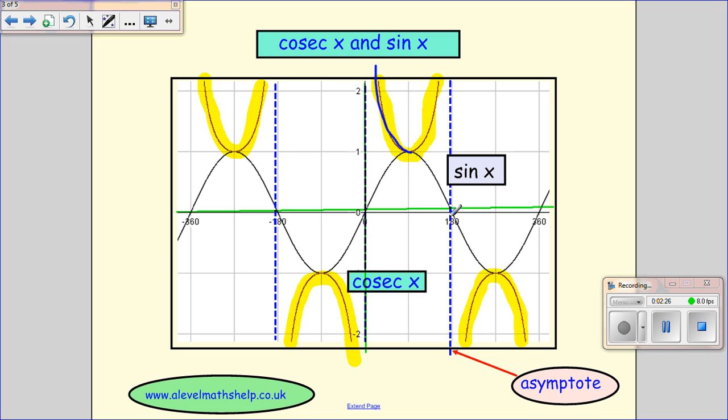Then as this goes back down to 0, we'll have 1 over 0 again, and so we head back off up to infinity again, and then we start again. So that's how the cosec curve looks like, and every time you go through 0, we're heading up to infinity.